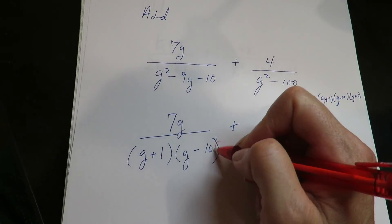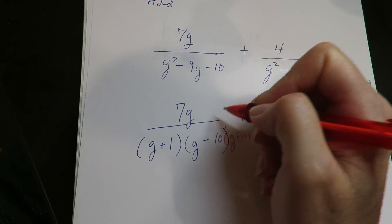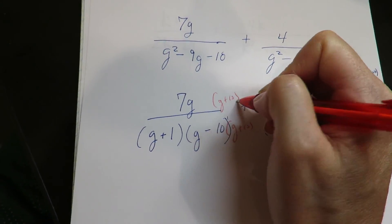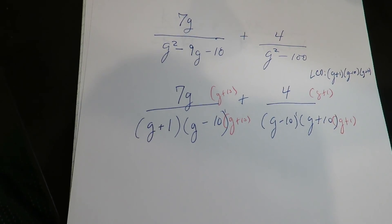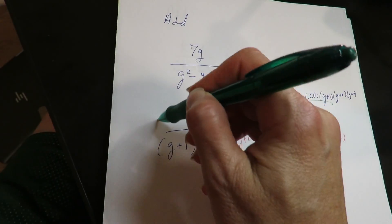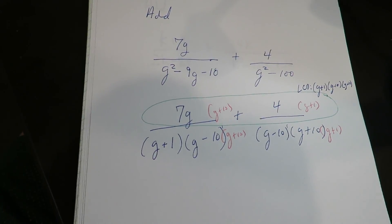Okay, let me balance this end. So this needs the G plus 10. This needs the G plus 1. So again, the whole point of doing that is so now I can squish the new numerator.